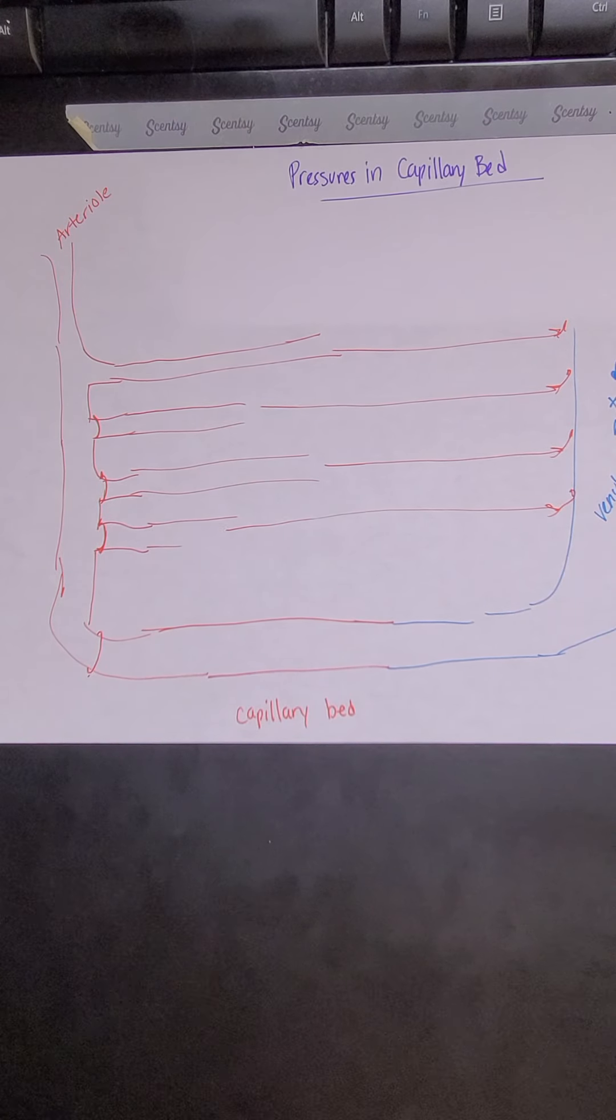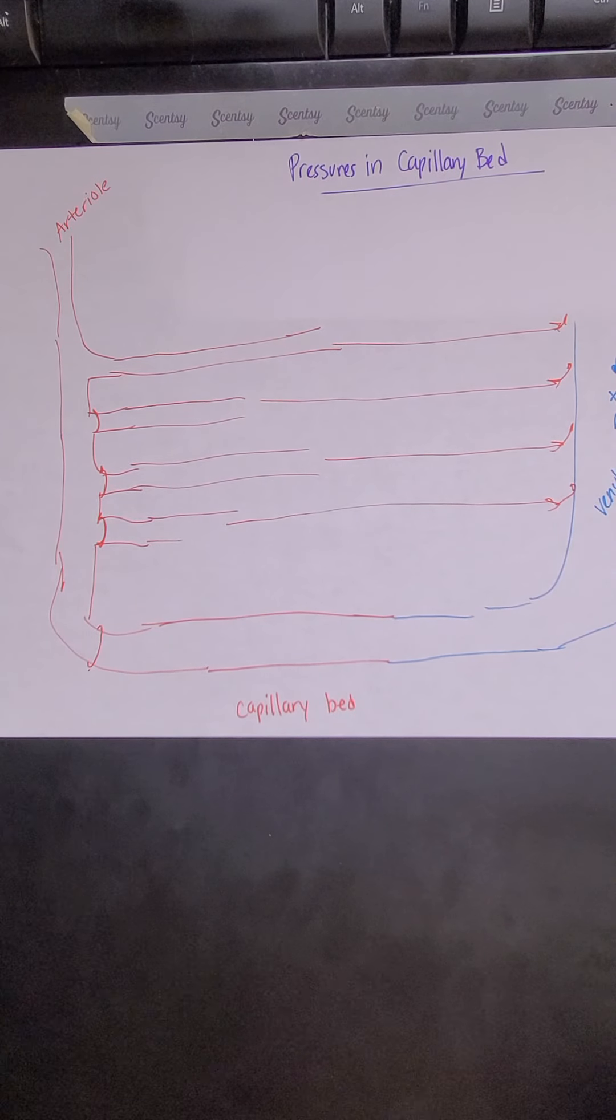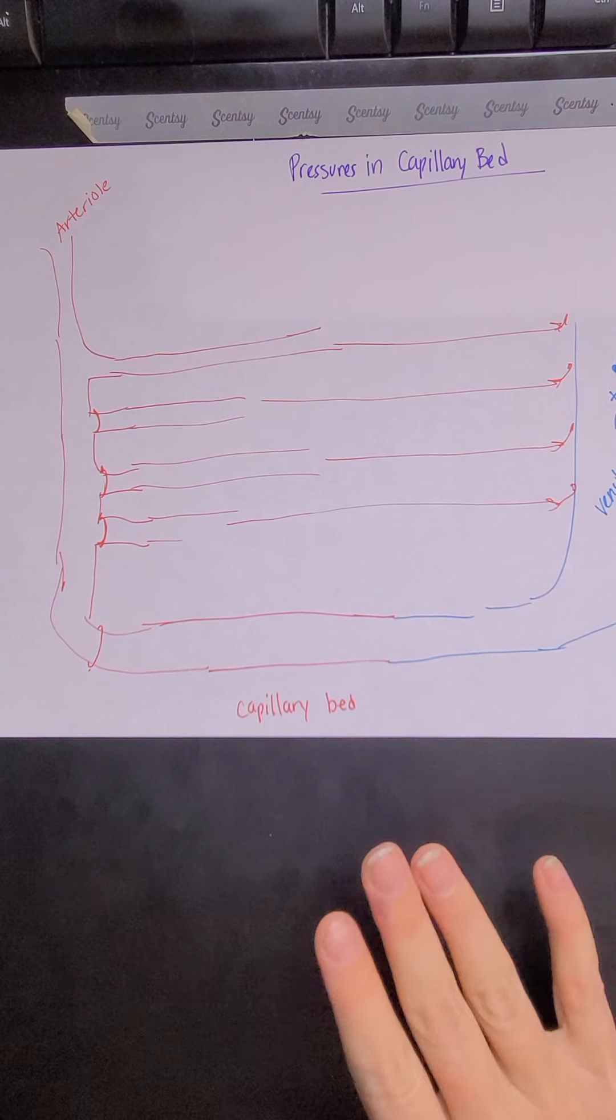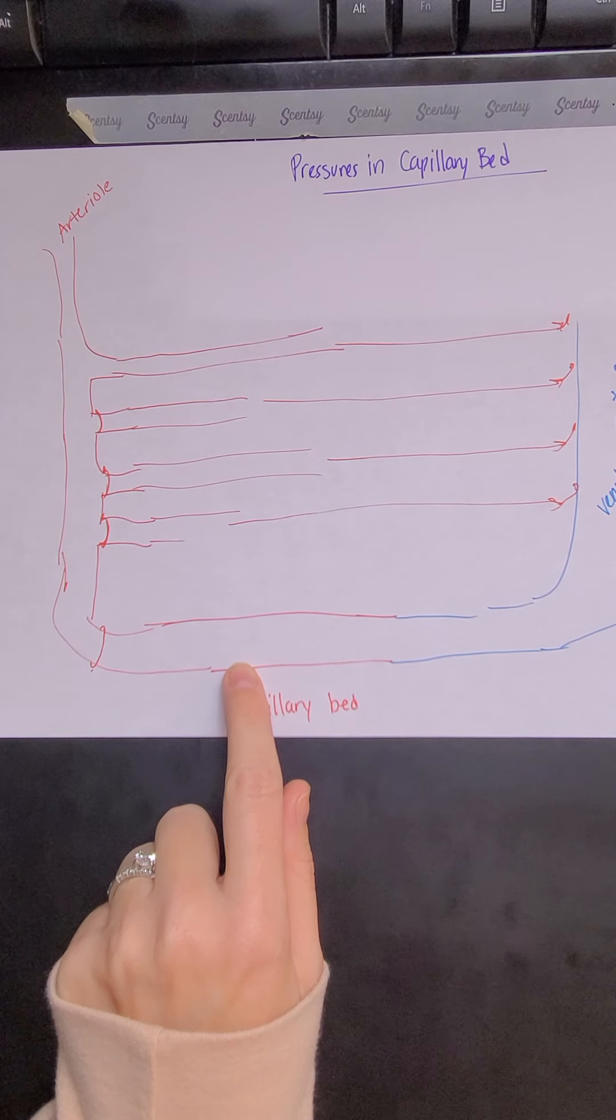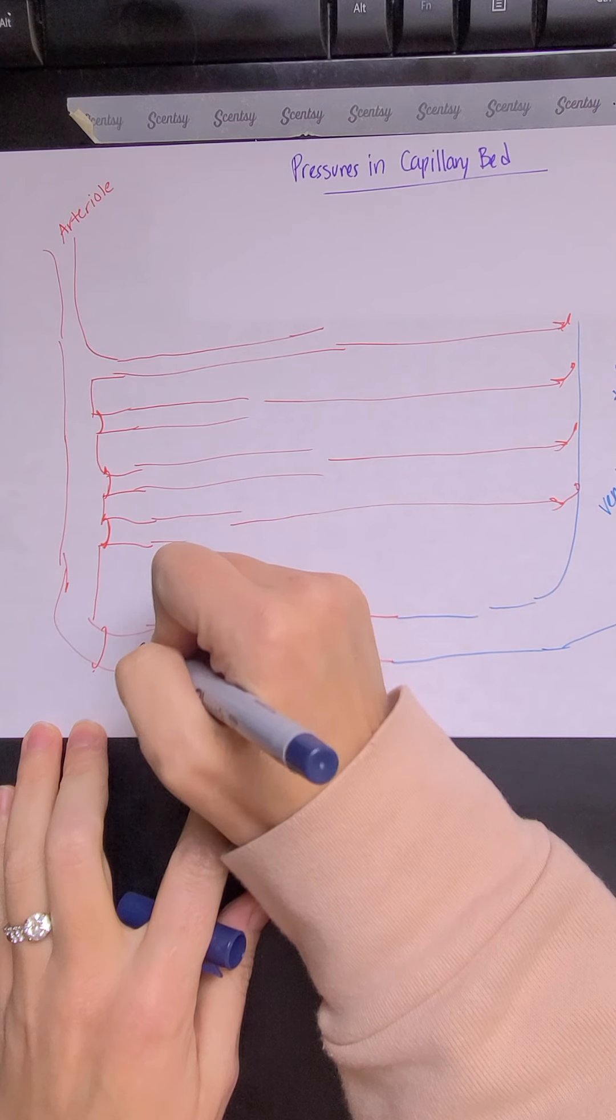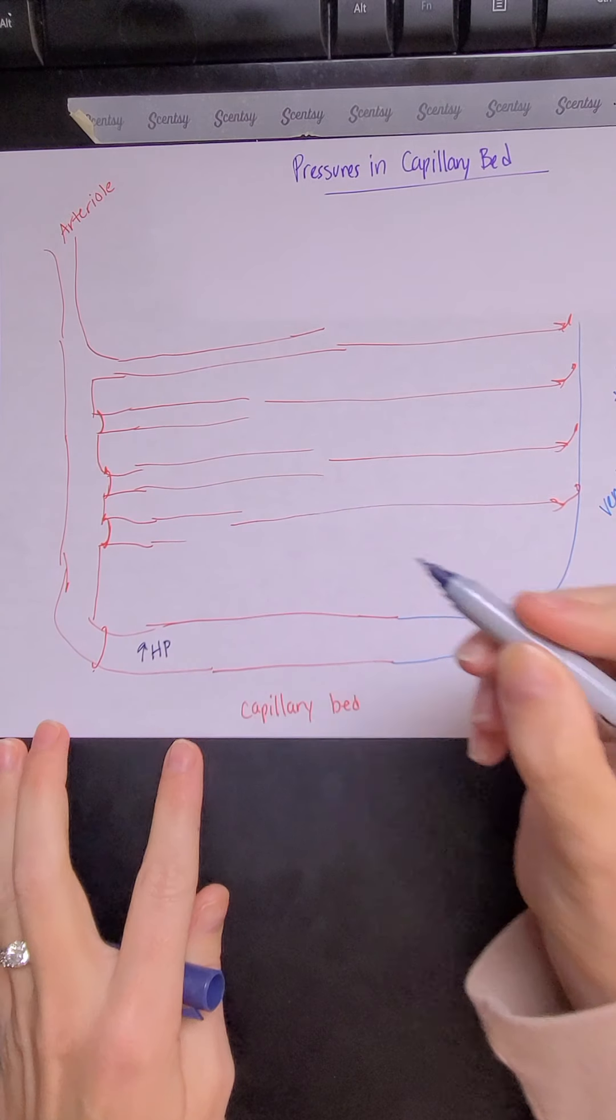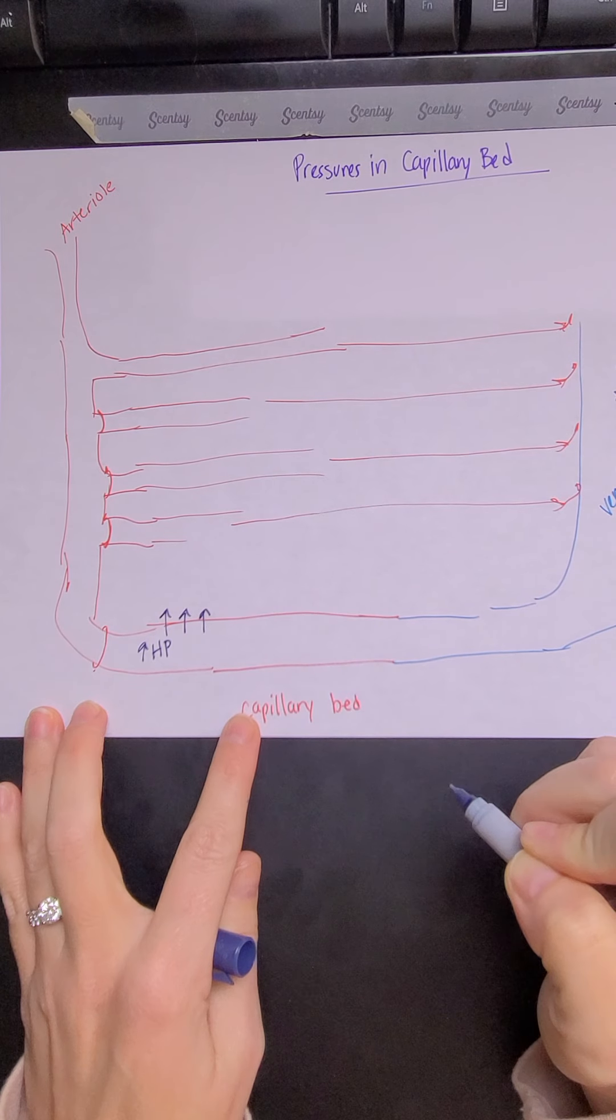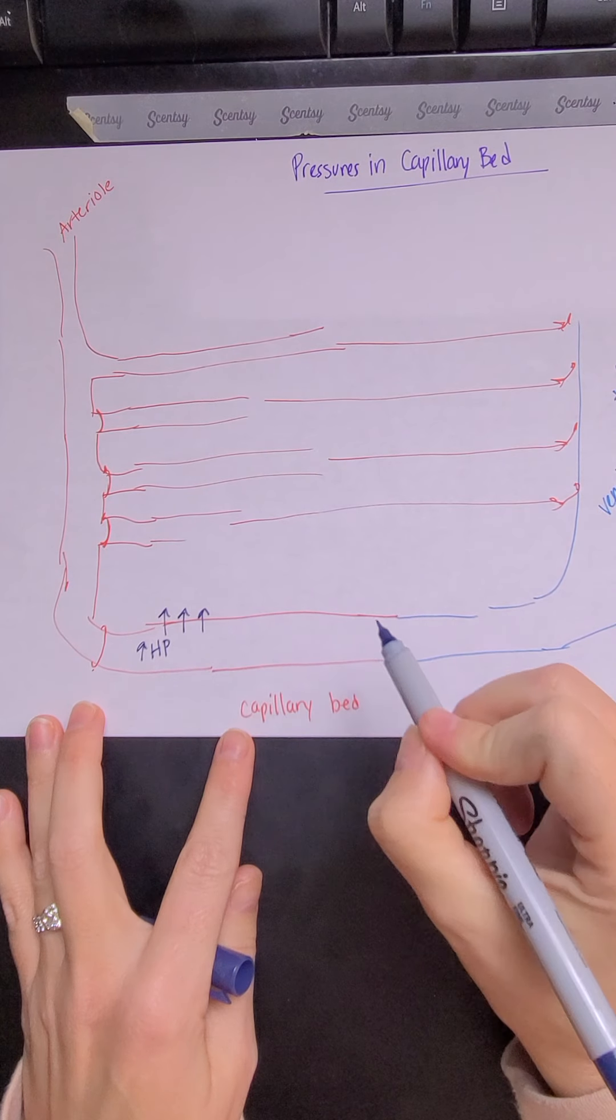So on our capillary bed, we have the force of hydrostatic pressure. Hydrostatic pressure is the first pusher of movement. So as soon as the blood gets into the capillary, hydrostatic pressure is high. We have a high hydrostatic pressure, HP. That high hydrostatic pressure is going to push out solutes, water, pretty much everything except cells, right? Because this is a continuous capillary.